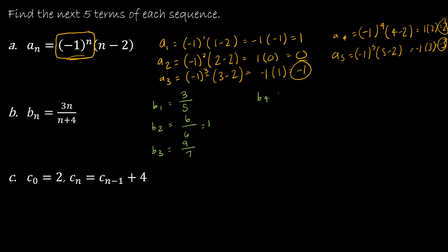B sub 4 would be 3 times 4, which is 12, and 4 plus 4, which is 8 — and of course we would reduce. And b sub 5 is 3 times 5, or 15, over 5 plus 4, which is 9, and of course we would reduce.